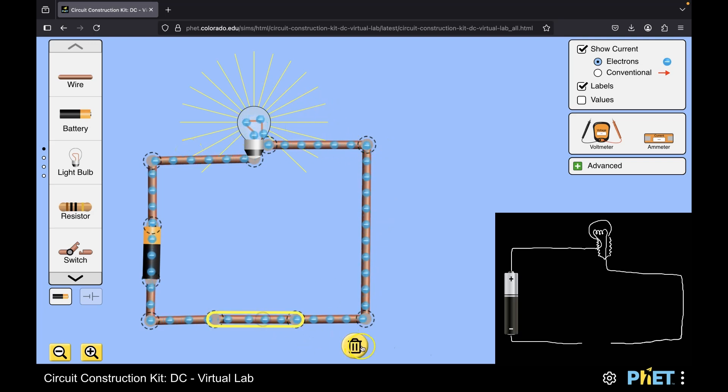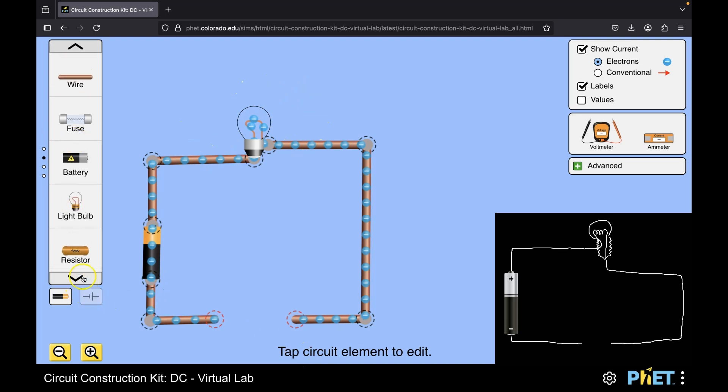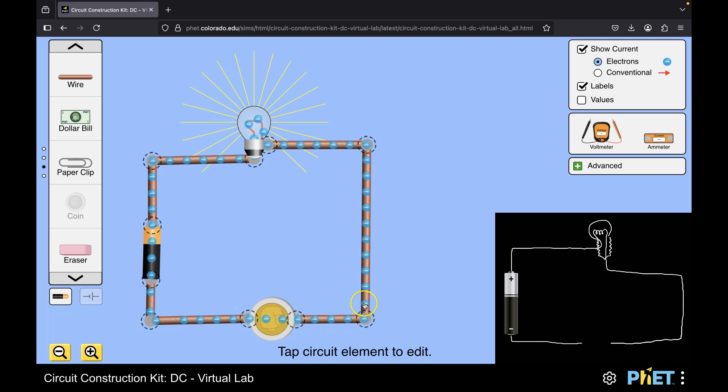But what if instead of this wire, I placed some other conducting material? Let's say I took this coin. What do you think would happen if I took this coin and place it here? Wow! Even with this coin, the electrons are flowing and the light is glowing on the bulb. This is so cool.